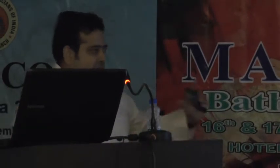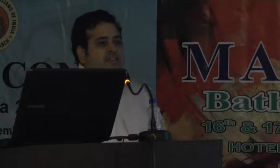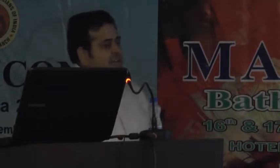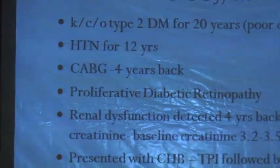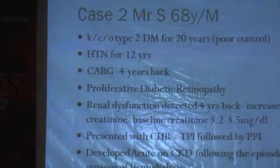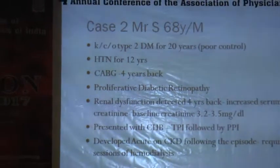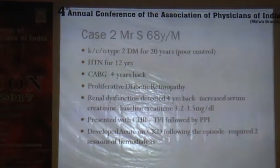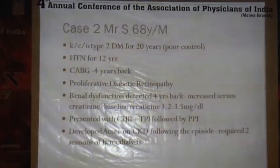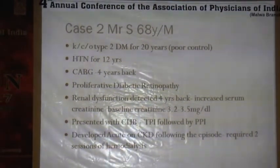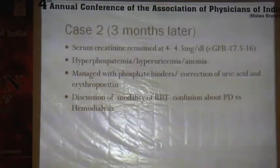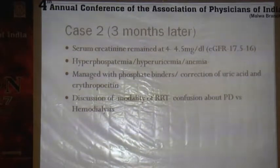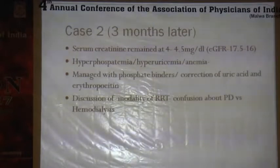In complete distinction, the second patient is a 68-year-old male, a known case of diabetes for 20 years, hypertensive for 12 years, had CABG four years back, and has proliferative diabetic retinopathy with all complications of diabetes and mild renal dysfunction. He presented with complete heart block requiring TPI insertion, during which he developed acute AKI on CKD and required two sessions of dialysis. He gradually came off dialysis with a creatinine of four to four and a half, with other complications of CKD.